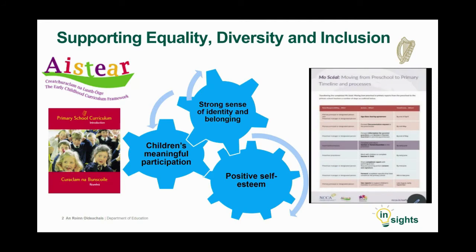The primary curriculum builds on children's experiences of Aistear, the Early Childhood Curriculum Framework. The primary curriculum is broad and it offers choice in the selection and sequencing of content. It also focuses on the developmental needs of children. This ensures that it is adaptable to the diversity of children's circumstances and experiences, supporting the inclusion and meaningful participation of, and equality of opportunity for, all children irrespective of their gender, religion, culture, ability, age, ethnicity or family background.